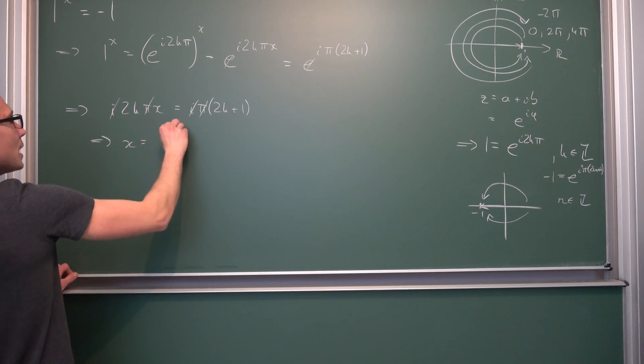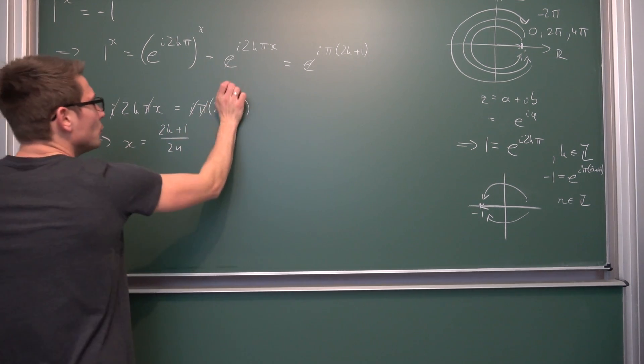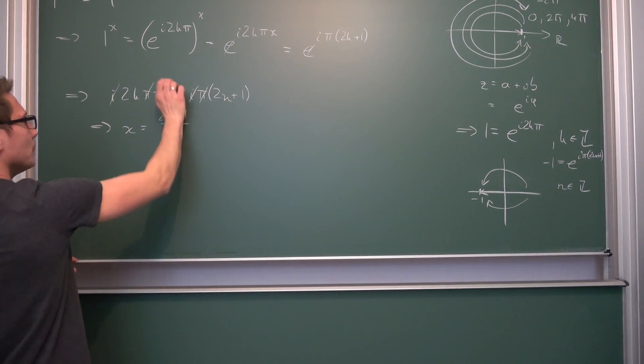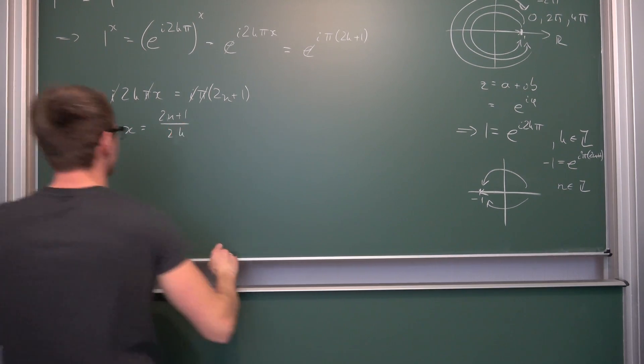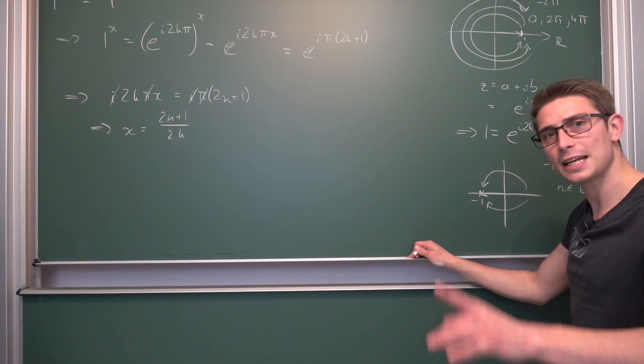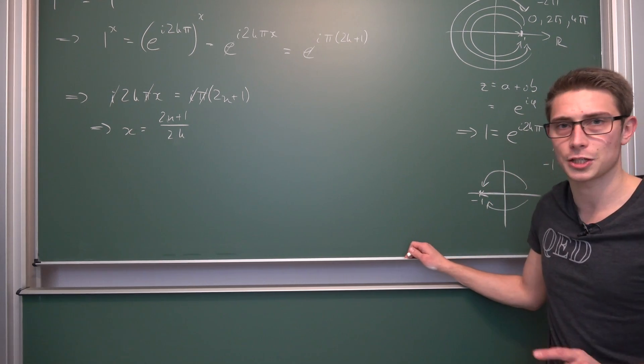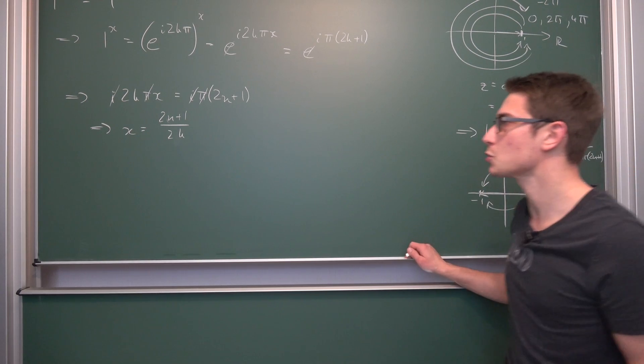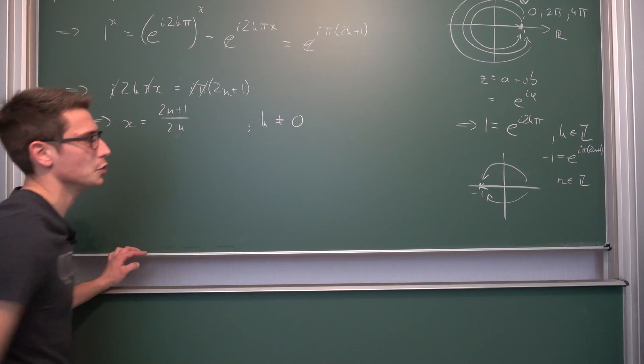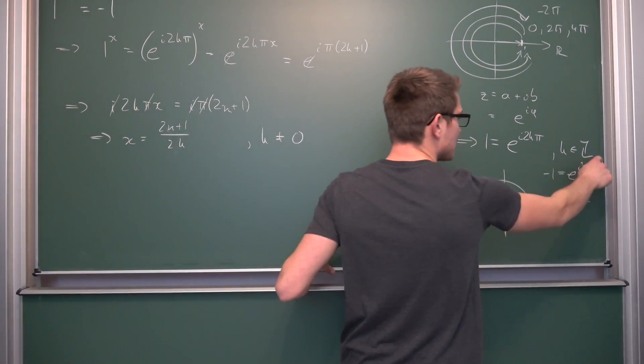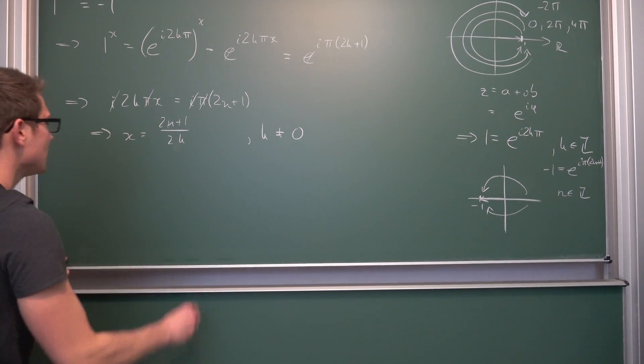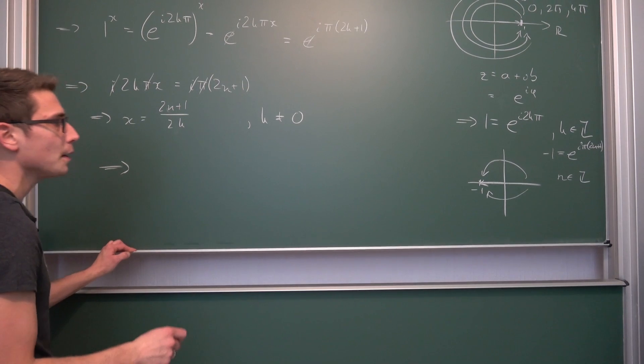Namely, x is of the form (2n+1) divided by 2k. And that's it. This is the form that our x takes on. And if we just take a look at the principal branch, meaning on the first rotation. By the way, k must not be equal to 0. So our k is actually element of the positive and negative integers without 0, obviously, otherwise we can't divide by it.